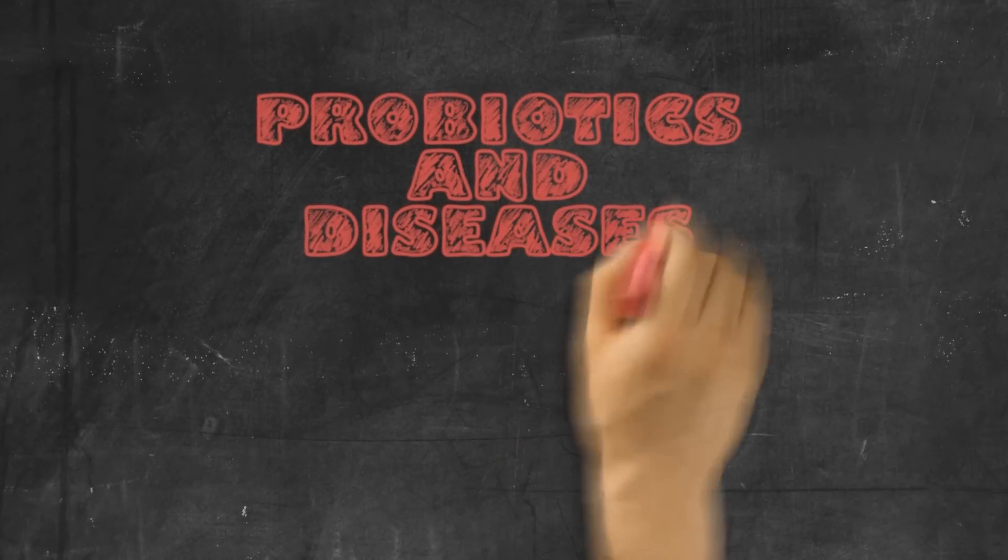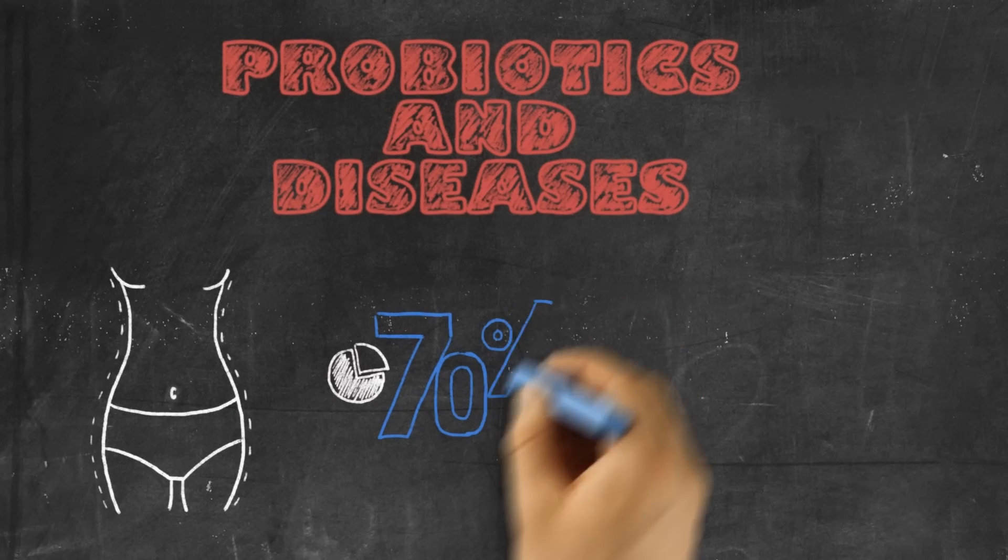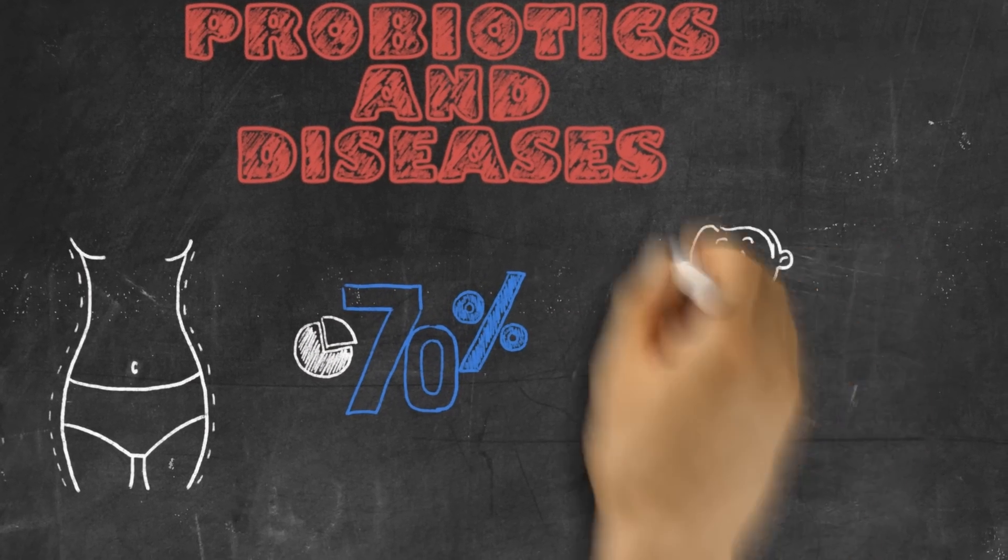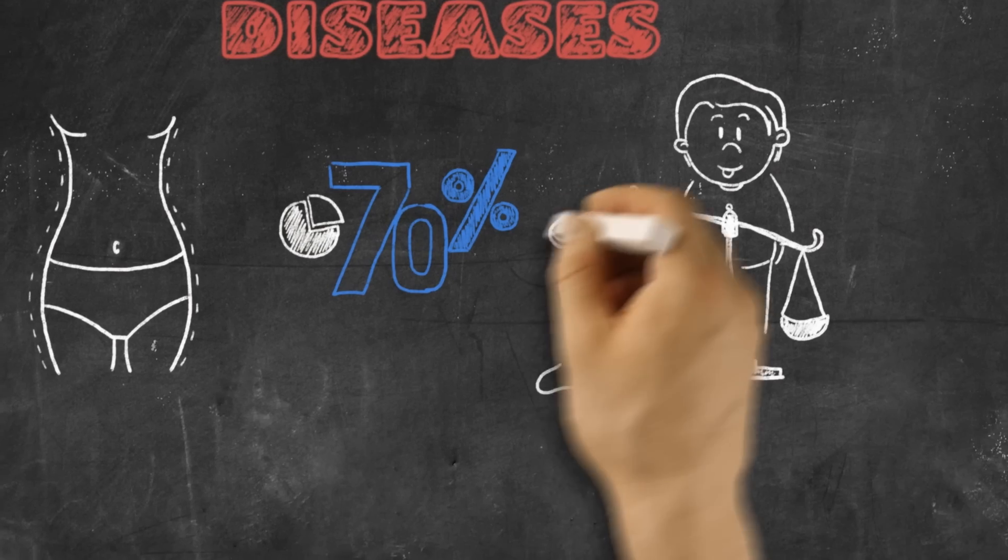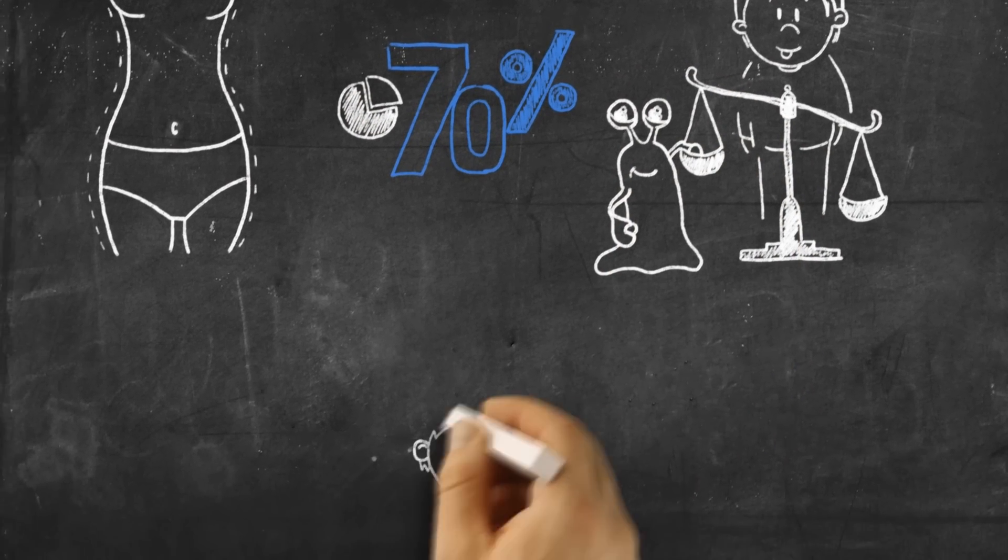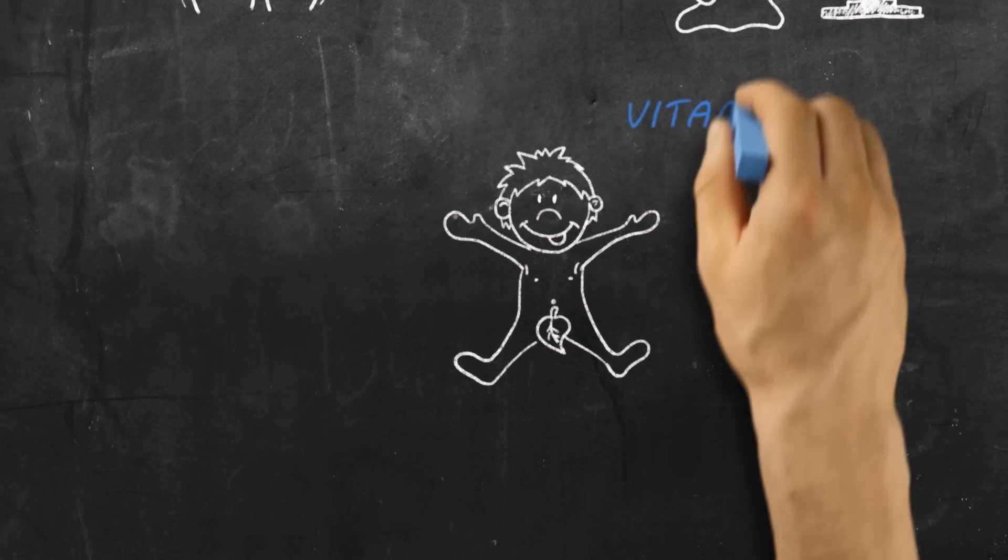Probiotics and diseases. The intestinal mucosa represents up to 70 percent of the immune system. A disturbance in the balance of intestinal microflora can be improved by friendly probiotic bacteria.